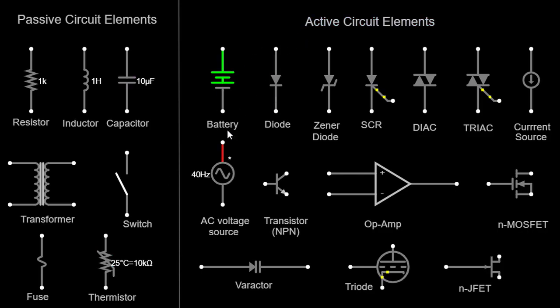A battery is a device that converts chemical energy into electrical energy. It provides a constant voltage source in a circuit, allowing a continuous flow of current. The positive terminal is represented by a longer line and the negative terminal by a shorter line. A diode is a semiconductor device that allows current to flow in only one direction, acting as a one-way valve for electric current. Diodes are represented by a triangle pointing towards the direction of current flow. A Zener diode is a specialized type of diode designed to operate in the reverse breakdown region, used for voltage regulation and protection against voltage spikes.